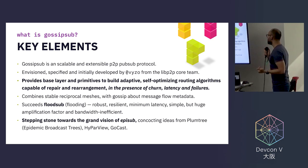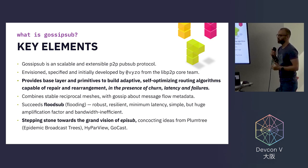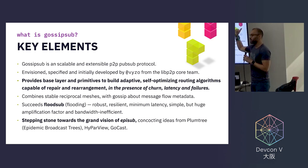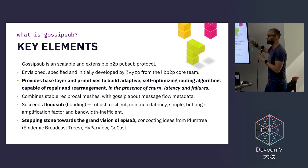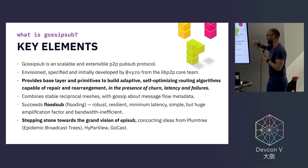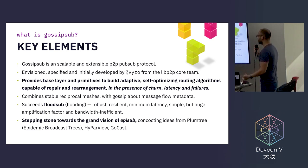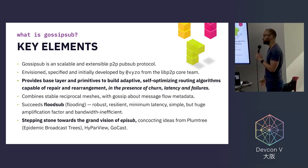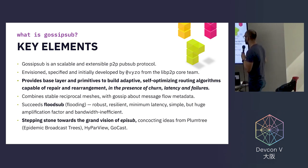What is GossipSub? The key elements are: first, it's a scalable and extensible PubSub protocol. GossipSub itself is not necessarily intended to be a final peer-to-peer PubSub protocol — it is a protocol on top of which we can overlay different routers to take different decisions. GossipSub provides the primitives to ensure messages are delivered, and that enough gossip metadata is circulating on the network so that different and alternative routing decisions can be taken. It was authored and specified initially by a developer called Viso from the Lib2B core team. It provides a base layer and primitives to build adaptive, self-optimizing routing algorithms capable of repair and rearrangement in the presence of churn.